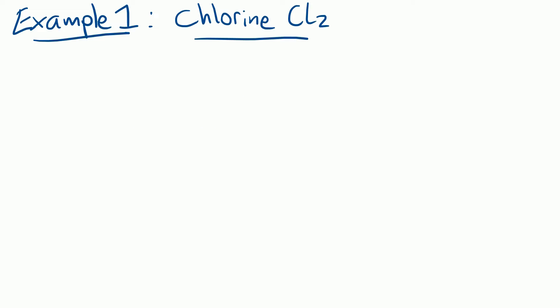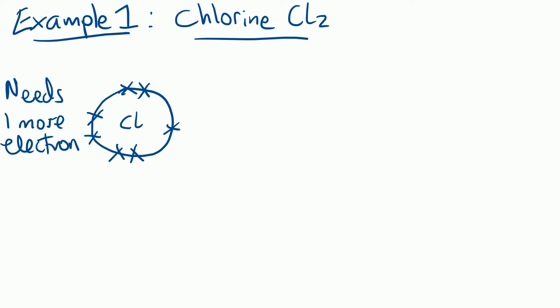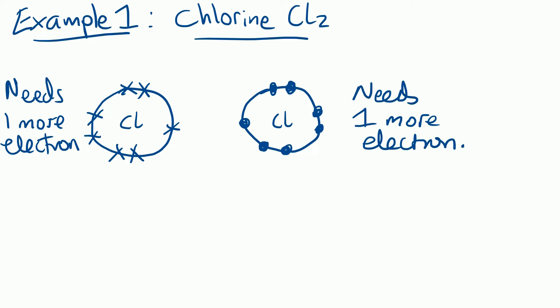In this first example we're going to see how two chlorine atoms can join together to make a chlorine molecule. Here we have the first chlorine atom - it's in group 7 so it's got 7 electrons in the outer shell. That needs one more electron. The other chlorine atom has also got 7 electrons in the outer shell and also needs one more electron. I've drawn one atom with crosses and one with dots - it doesn't matter which way round; these are called dot and cross diagrams.